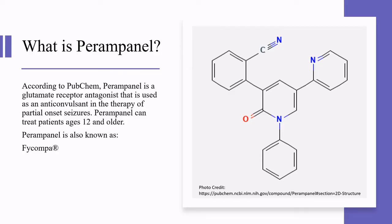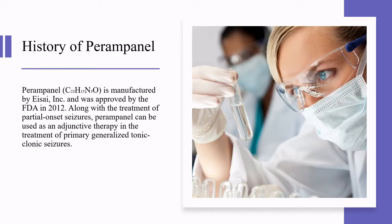According to PubChem, perampanel is a glutamate receptor antagonist that is used as an anticonvulsant in the therapy of partial onset seizures. Perampanel can treat patients ages 12 and older. Perampanel is also known as FYCOMPA, manufactured by Eisai Incorporated, and was approved by the FDA in 2012.